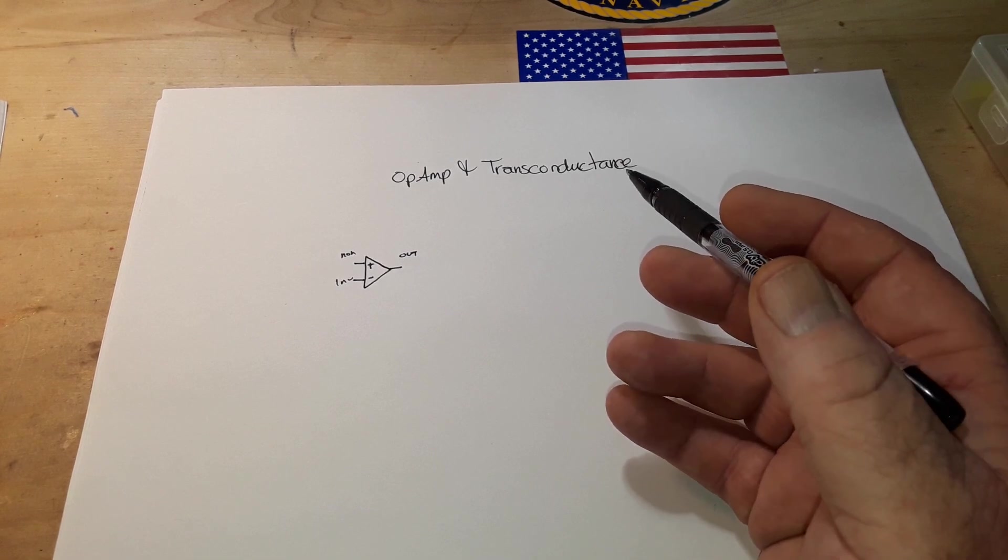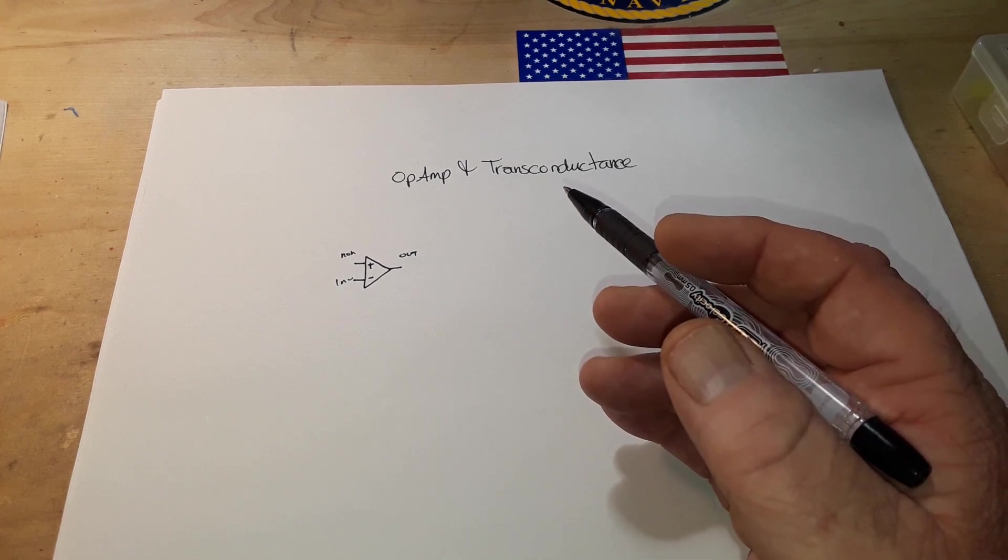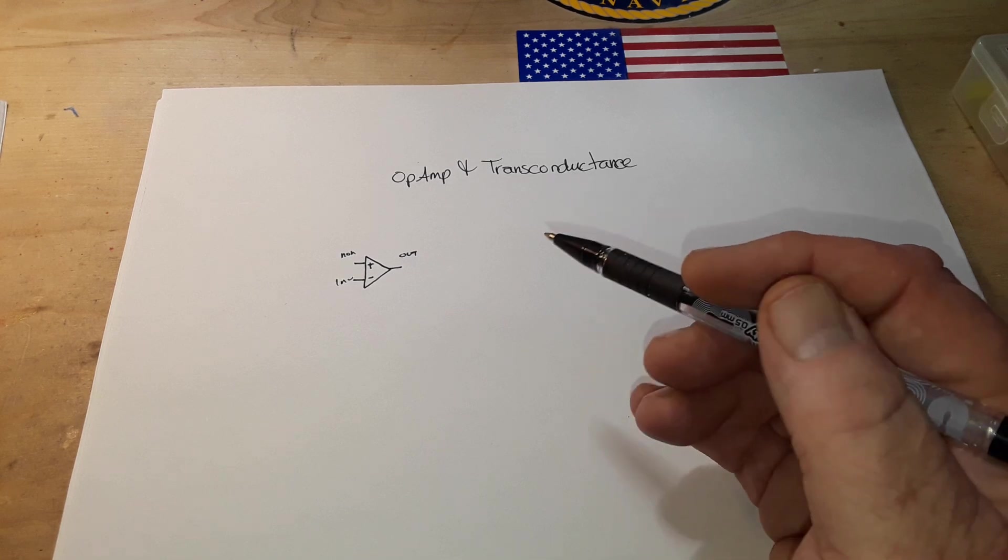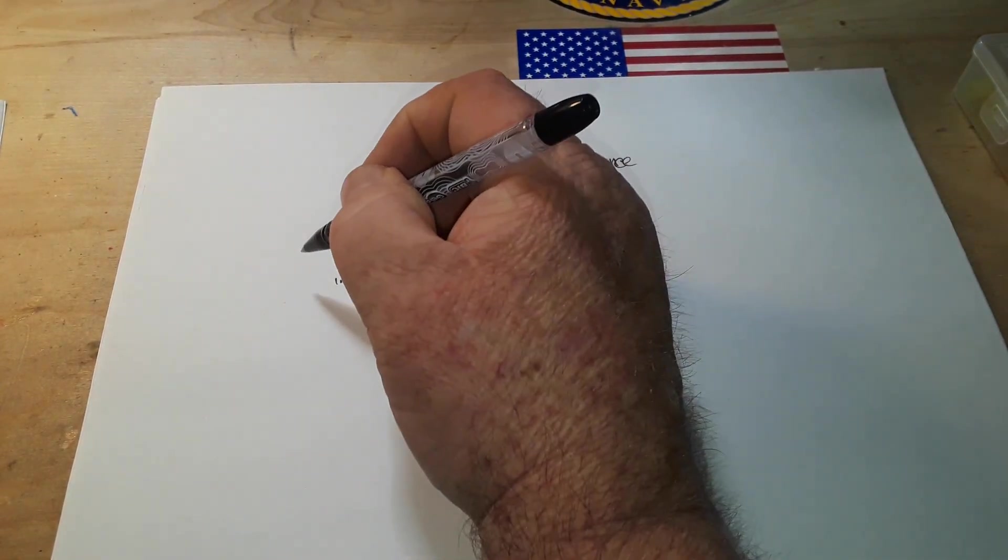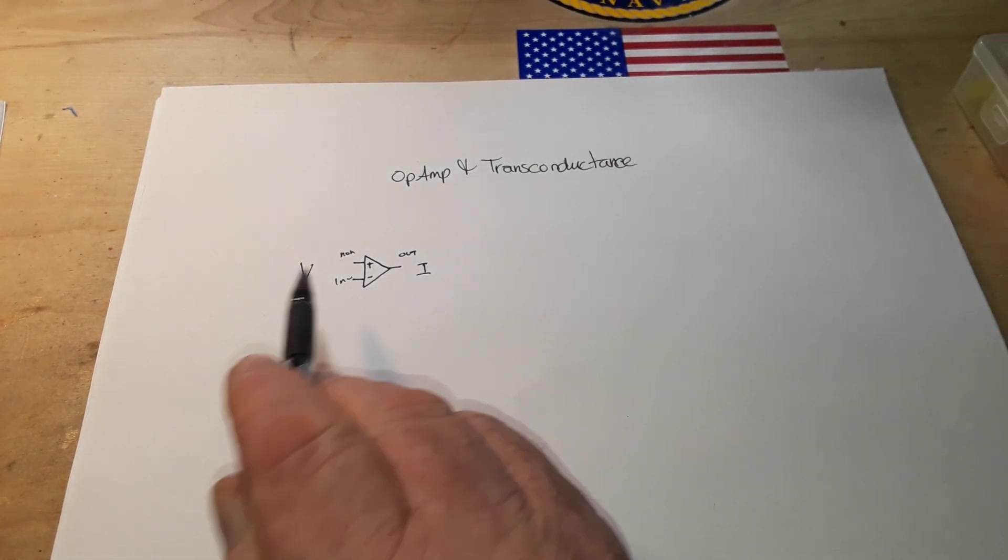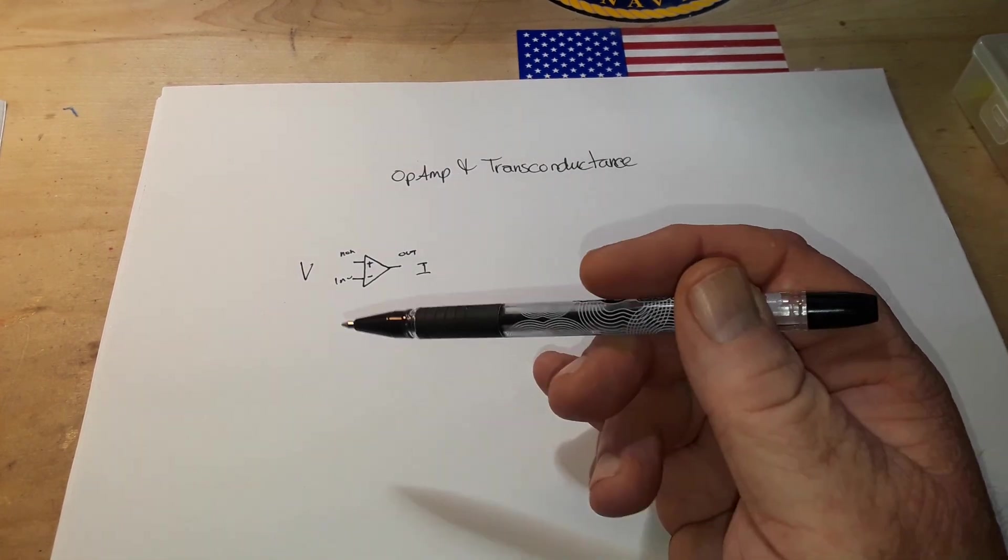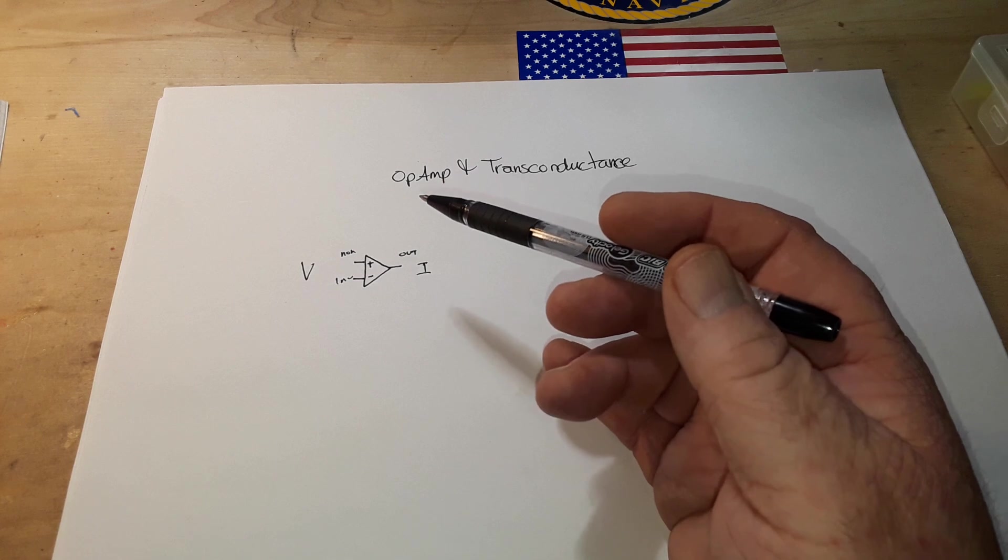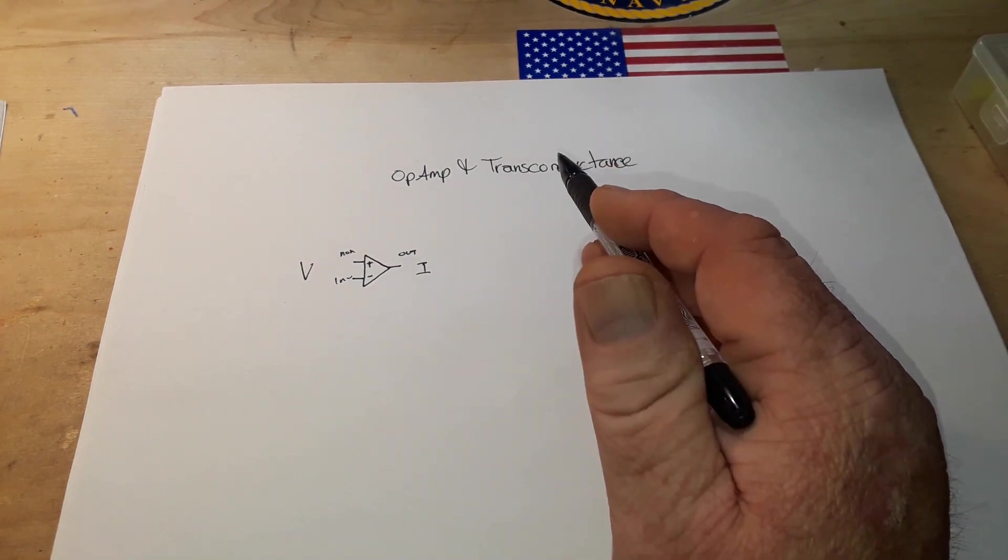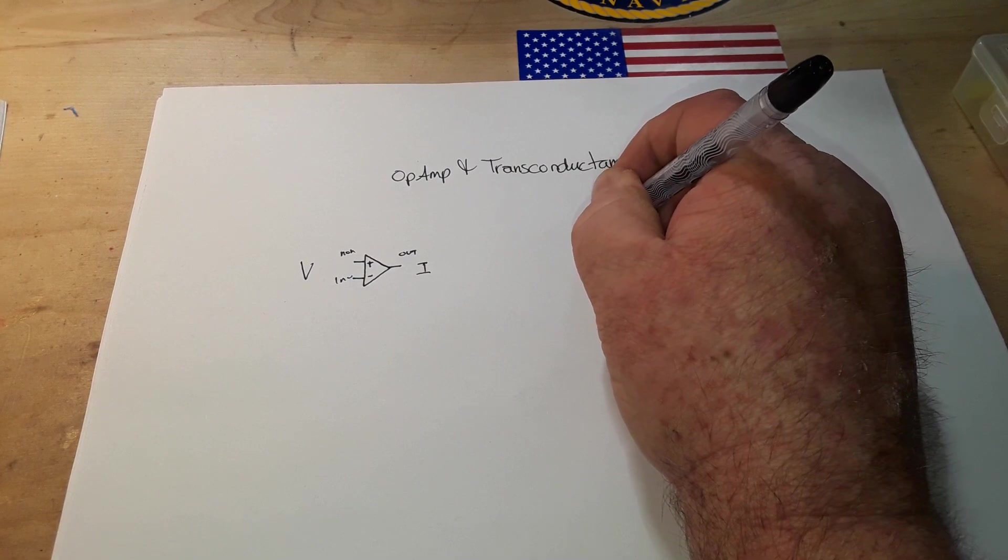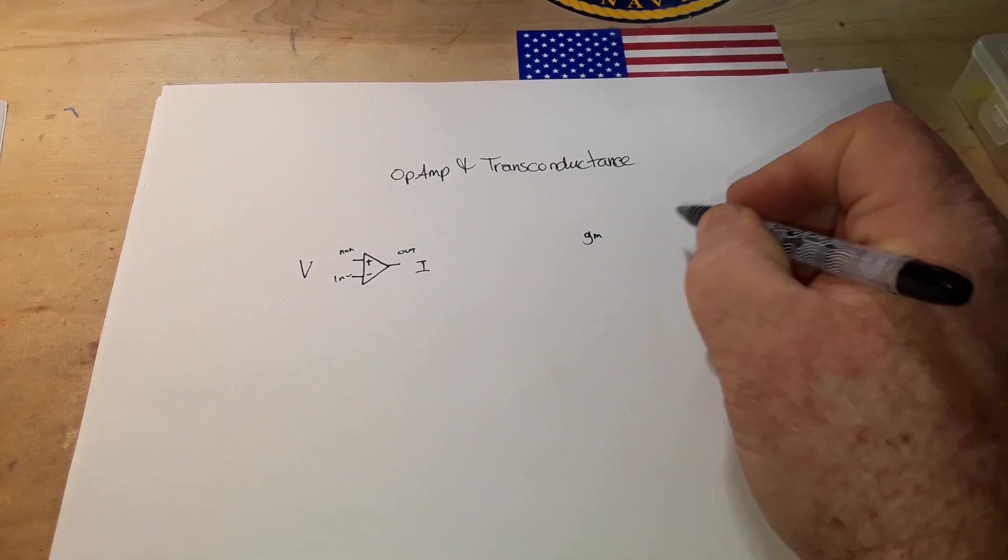When we talked about all those other op amp characteristics like input offset, common mode rejection, bandwidth, slew rate, the next we have is transconductance. Transconductance is the characteristic of the current on the output as related to the voltage across the input. Conductance of course is the reciprocal of resistance. There is also an AC version called trans-admittance, but we're not getting into that. Transconductance is generally referred to as G conductance with a subscript M on it for mutual.